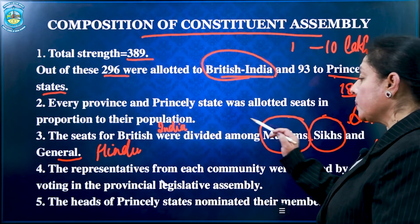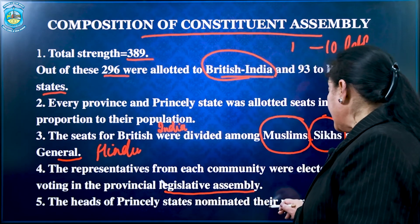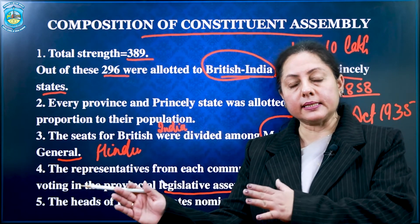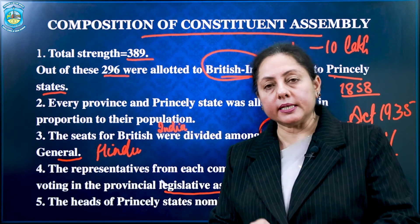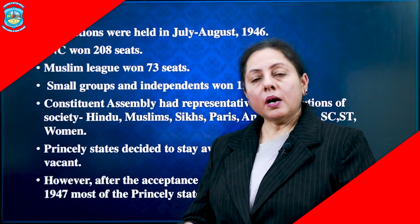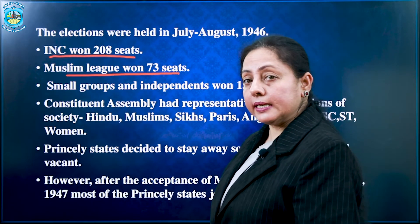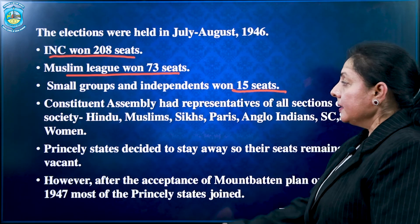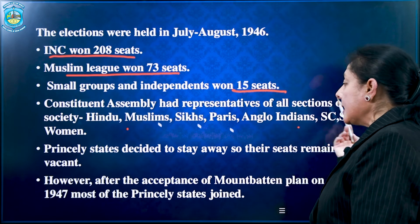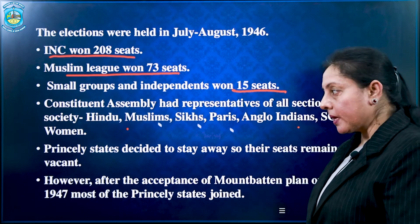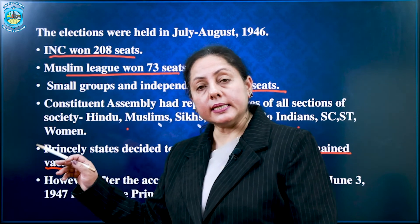Representatives from each community were elected by voting at the provincial legislative assembly, while the heads of the princely states nominated their members. So the Constituent Assembly had both elected and nominated members. The outcome of the elections was: INC secured 208 seats, Muslim League 73 seats, and small groups won 15 seats. The Constituent Assembly had representation from all minorities — Hindus, Muslims, Sikhs, Parsis, Anglo-Indians, SC/ST, and women. The princely states decided to stay away from the Constituent Assembly, so those seats remained vacant.